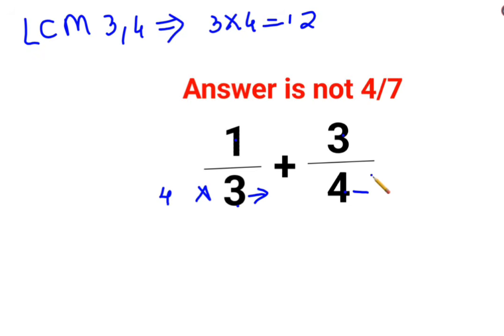You can do this by multiplying by 4 here, and multiplying by 3 here. But in mathematics, when you multiply with some number in the denominator, you have to multiply with the same number in the numerator as well. So this becomes 4/12 plus 9/12.